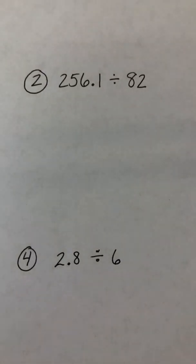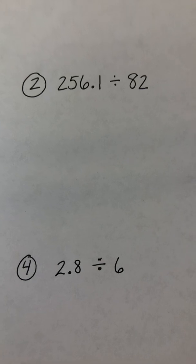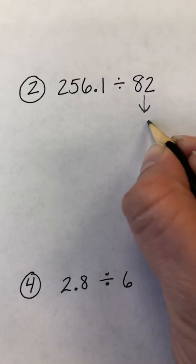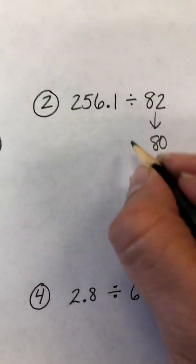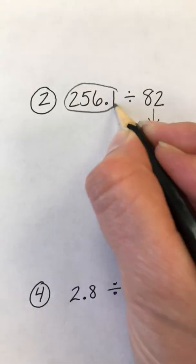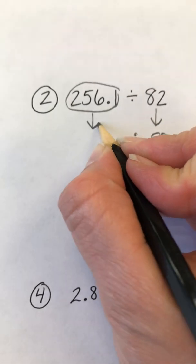Let's try another one. 256 and 1 tenth divided by 82. So step 1, we're going to take our 82, round it to the nearest 10, which gives us 80, copy down our division sign, and then we're going to round this whole thing to a new number.